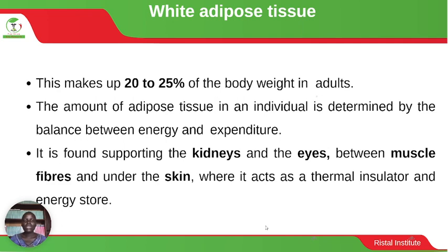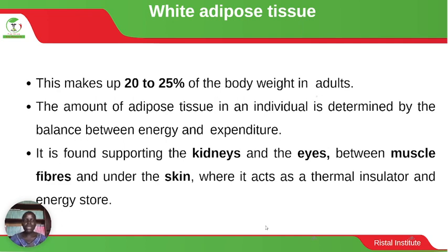White adipose tissue is found supporting the kidneys and eyes, between muscle fibers and under the skin where it acts as a thermal insulator and energy store. Under the skin, when you get a cut, you can see the white substance — that is the white adipose tissue. It insulates the body and can be broken down to provide energy.